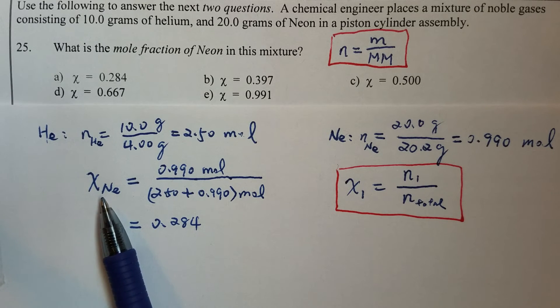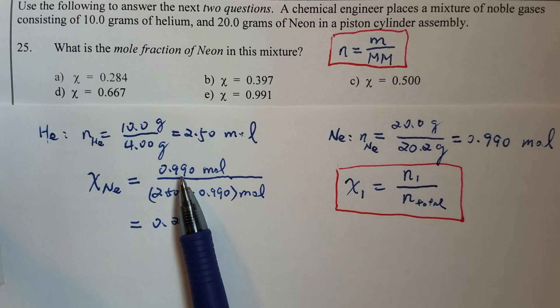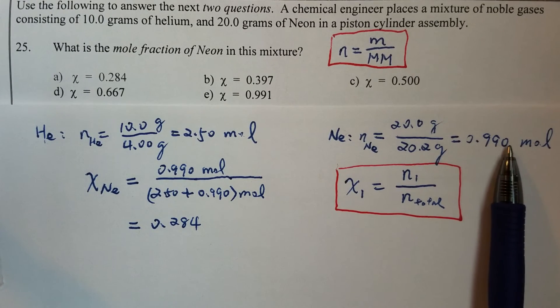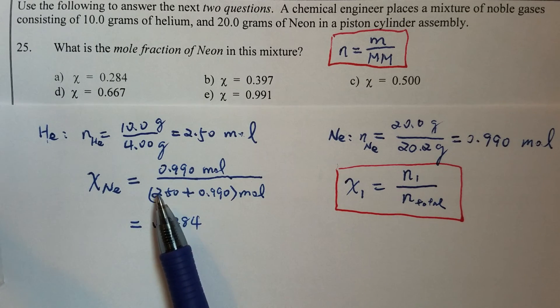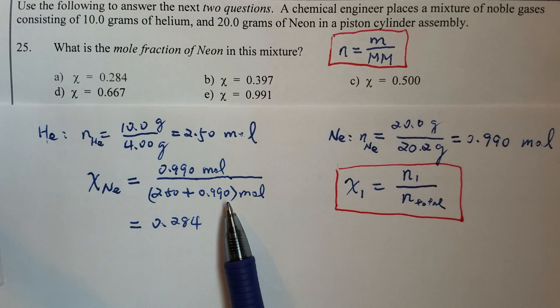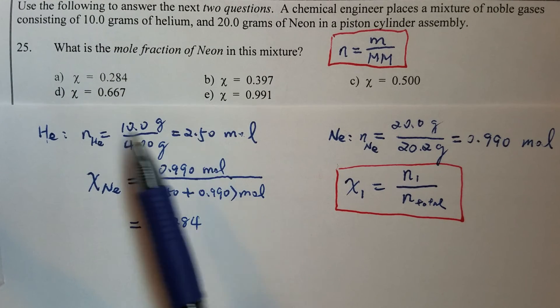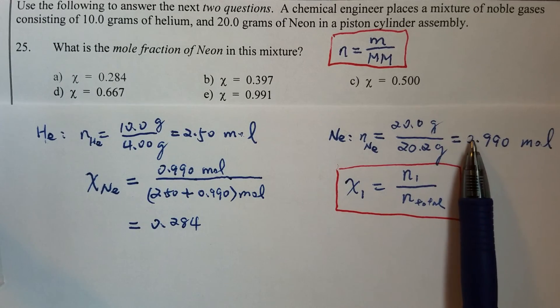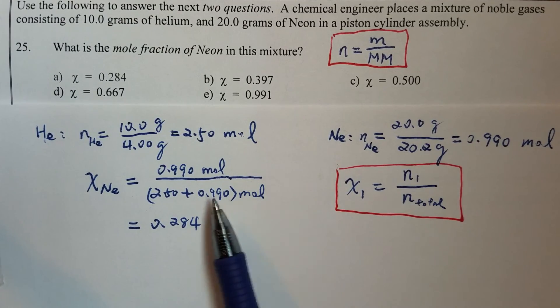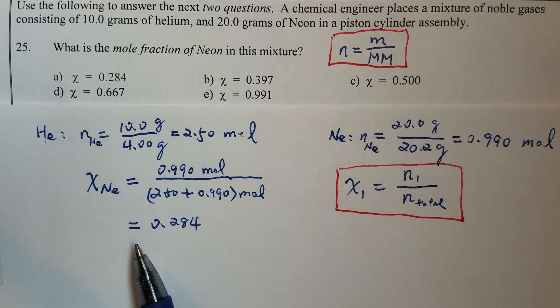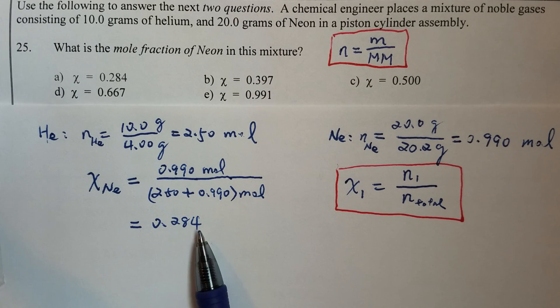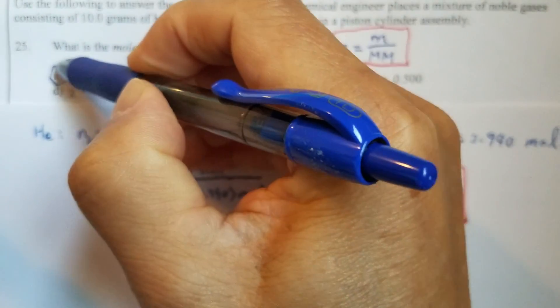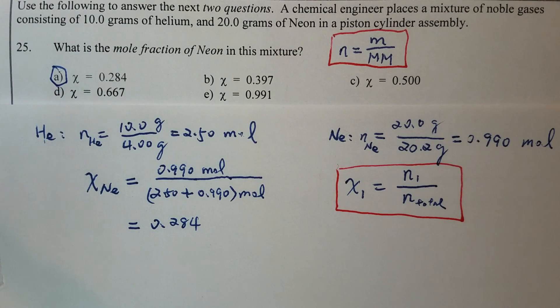So now the mole fraction of neon, we use 0.99, that's the number of moles of neon. And then the total number of moles, that should be the sum of helium is 2.5 and neon is 0.99, and the answer should be 0.284. That makes a as the correct answer.